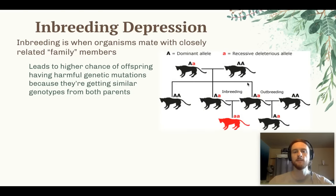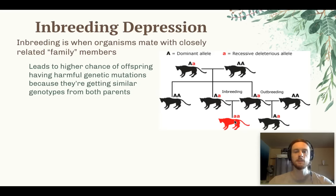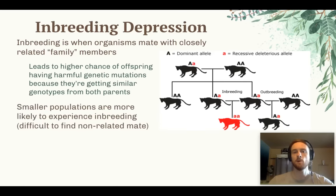When inbreeding occurs between two members of the same litter, they both carry the small 'a' — the recessive copy of a harmful allele — which has a mutation that will reduce the fitness of offspring. Because both parents carry that recessive allele, they have a higher chance of passing it on, so offspring of inbred parents often have decreased fitness. Smaller populations are more vulnerable to this because it's harder to find a mate that's less closely related.